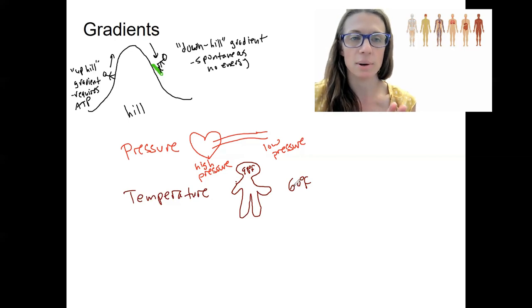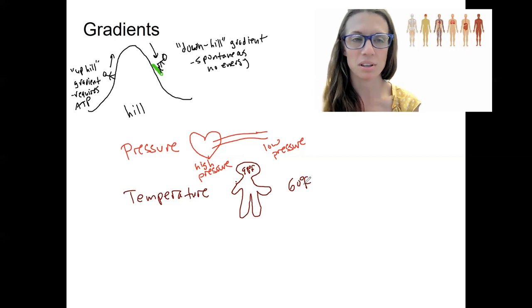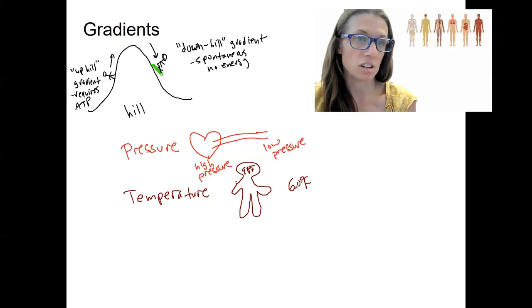That's a temperature gradient. There's going to be heat loss due to that difference. That heat loss is due to the gradient and our bodies are able to deal with that because of homeostatic processes that maintain body temperature. It's just fine, but it's a temperature gradient.